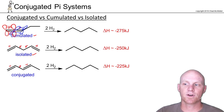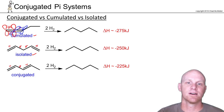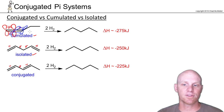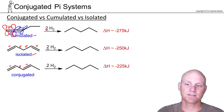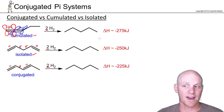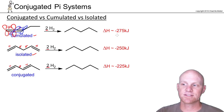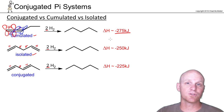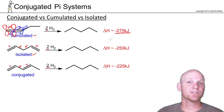We can see this all reflected in what are called heats of hydrogenation — the heat released in exothermic reactions when you turn an alkene into an alkane. For all these compounds, they've all got two sets of pi electrons, so they're all going to react with two equivalents of hydrogen with the appropriate catalyst. In this first example, it's exothermic and releases 275 kilojoules. When we talk about heats of hydrogenation, we usually just give the absolute value and say the heat of hydrogenation is 275 kilojoules.